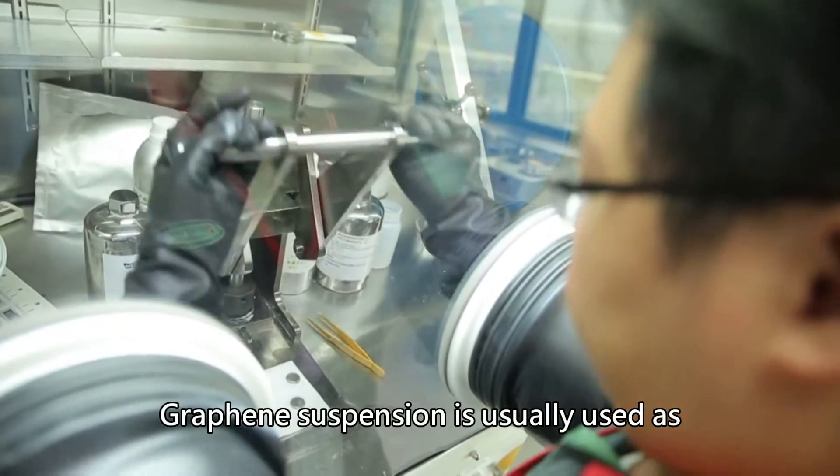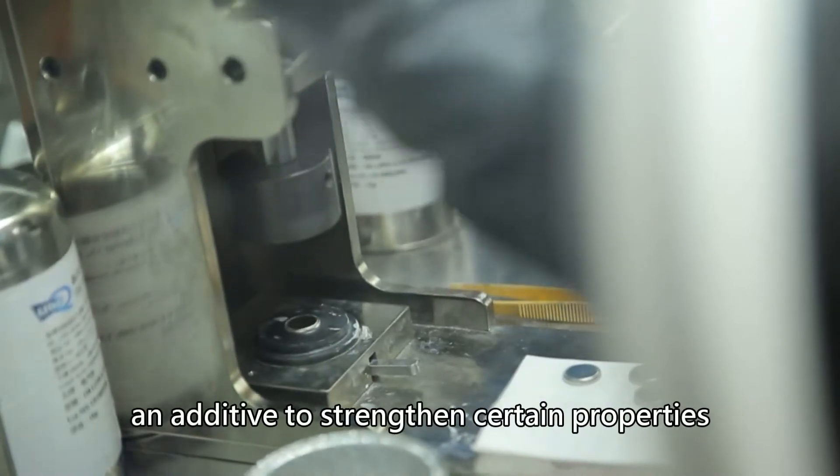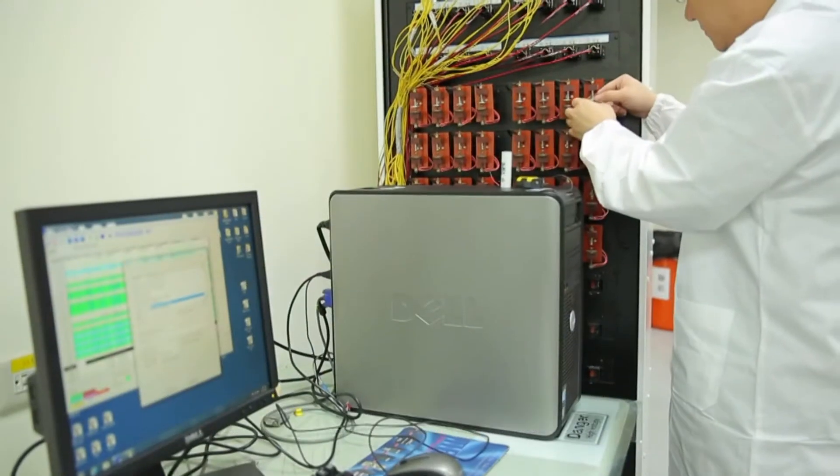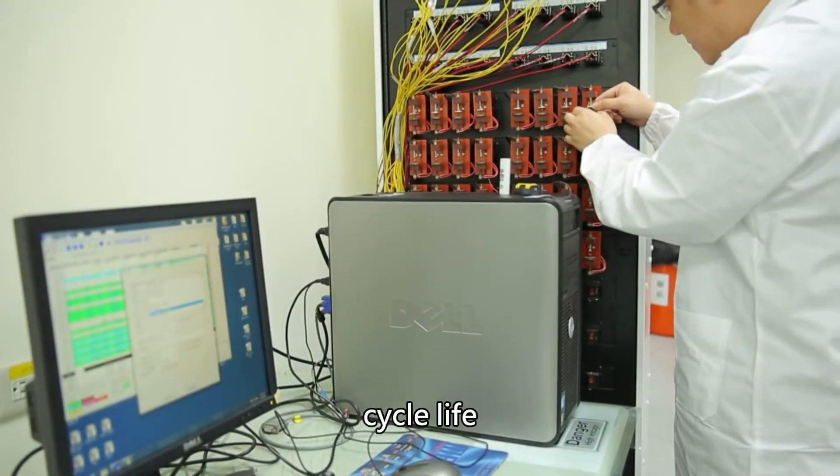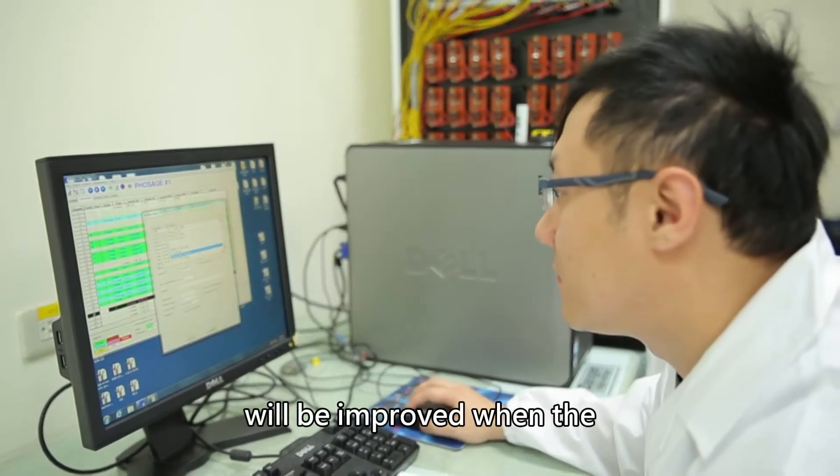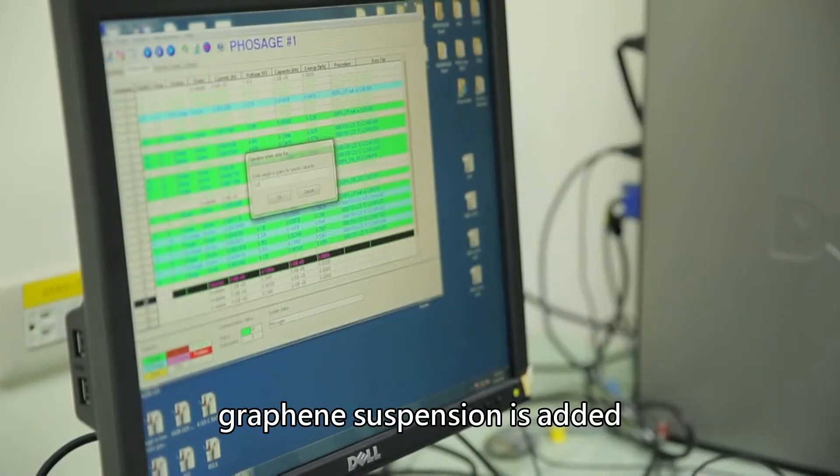Graphene suspension is usually used as an additive to strengthen certain properties that original matrix material lacks. The conductivity, cycle life, and capacity retention of the battery will be improved when the graphene suspension is added.